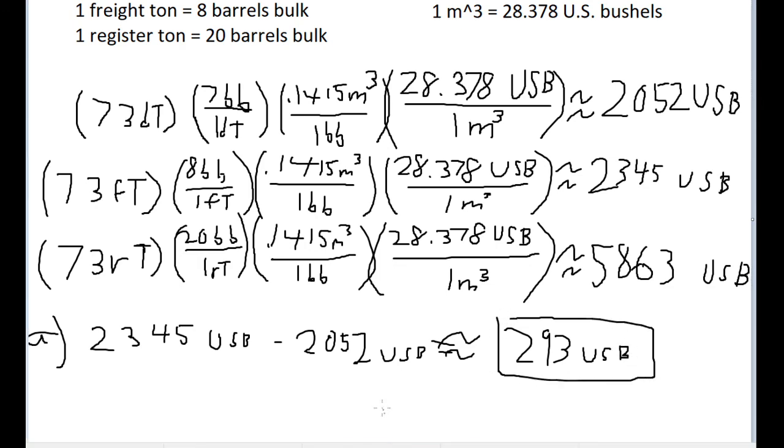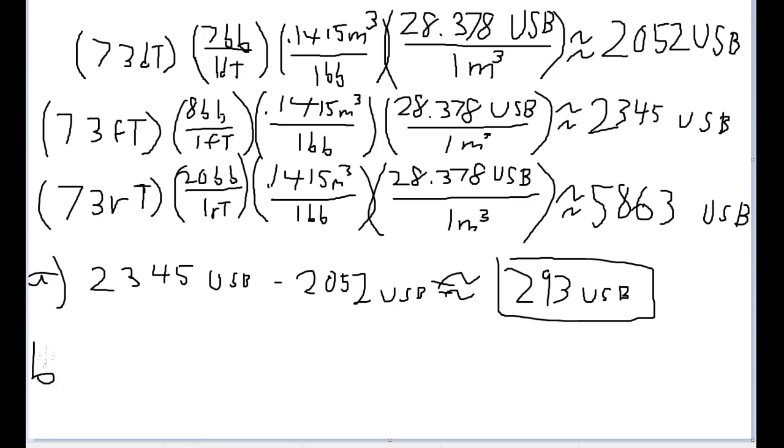And Part B asks basically the same thing, except it asks about how many extra bushels you would ship if we mistakenly shipped off 73 register tons instead of displacement tons. So let's do a similar subtraction. So that'll be 5863 U.S. bushels minus 2,052 U.S. bushels, if that's what they really meant.